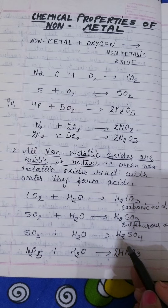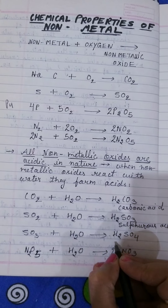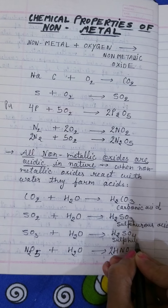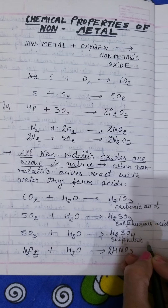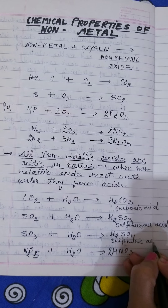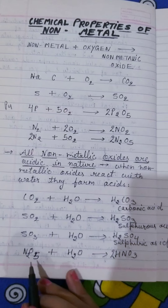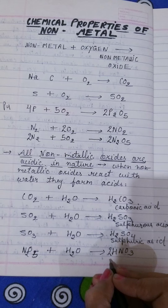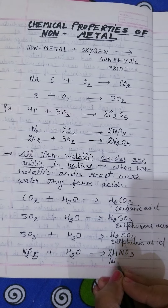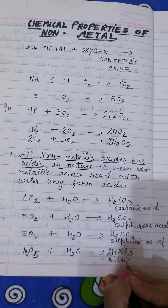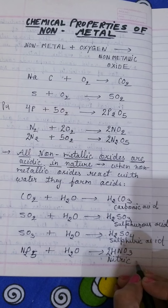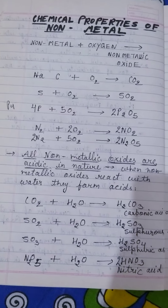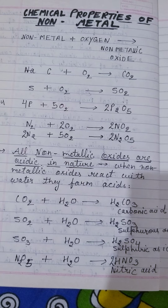When SO₃ reacts with H₂O it forms H₂SO₄, which we call sulfuric acid. When N₂O₅ reacts with water it forms HNO₃, which is nitric acid. All these reactions show that when non-metallic oxides react with water they form acids.